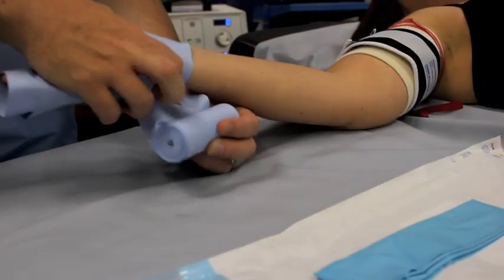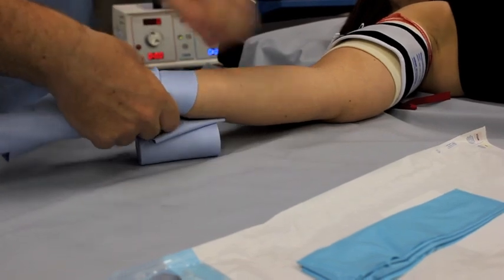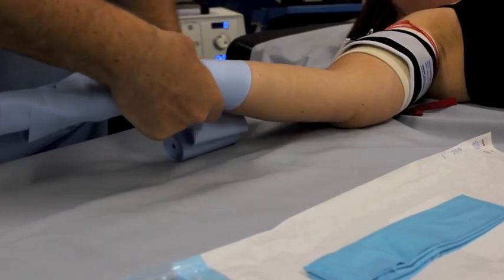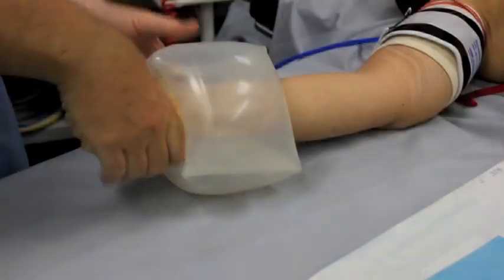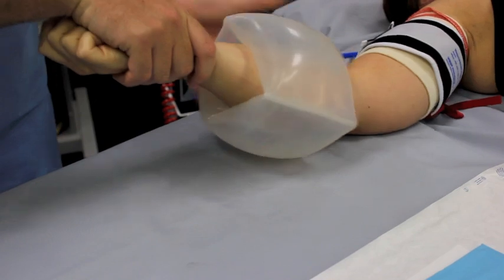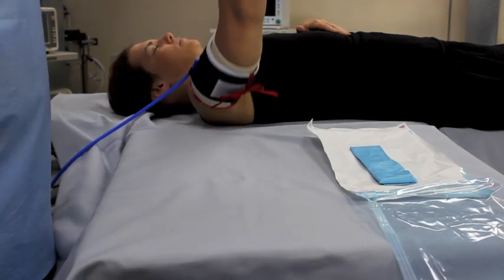There are various techniques of exsanguination, including the use of an esmarch bandage. The VBM range includes a sterile, disposable version available in various widths. VBM also offer an alternative in the form of roll-on cuffs. Exsanguination can also be achieved using elevation.